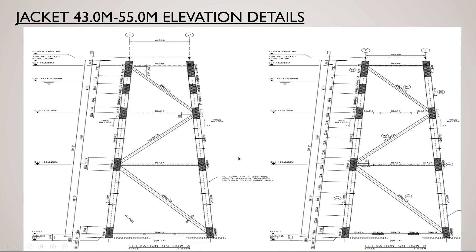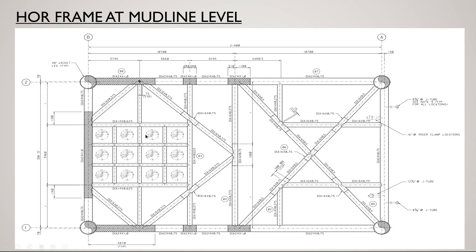This is the jacket for the maximum depth range — 43 to 55 meters. Starting from the mud line, the first horizontal bracing or mud line bracing is 1 meter up. It is trapezoidal in shape with vertical and horizontal bracings. Different elevations are 29.5 m and 11.25 m. It is constructed in three modules: module 1 up to 11.25 m, module 2 up to 29.5 m, and module 3 up to the mud line. They are welded together in the yard.